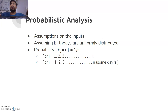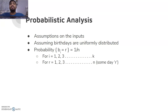Now let's start with the probabilistic analysis. We make assumptions about the distribution of inputs. We assume that birthdays are uniformly distributed — that every person in the room has a birthday on a different date. The probability that a person has their birthday on a particular date r is 1 out of 365 days, so the probability is 1/n, where n is the number of days, and r can be any day from 1 to n.